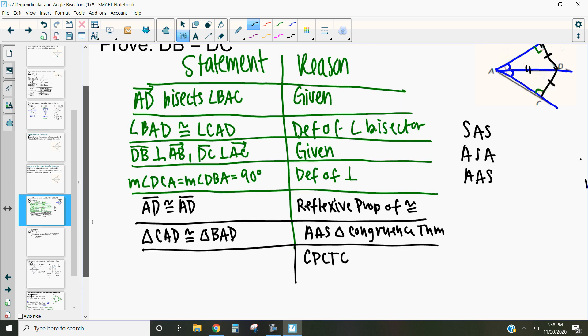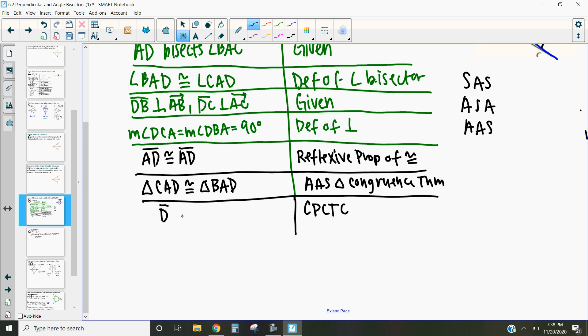So in this case, how that's going to help us is we can then say that segment DB is congruent to segment DC by that corresponding parts of congruent triangles.